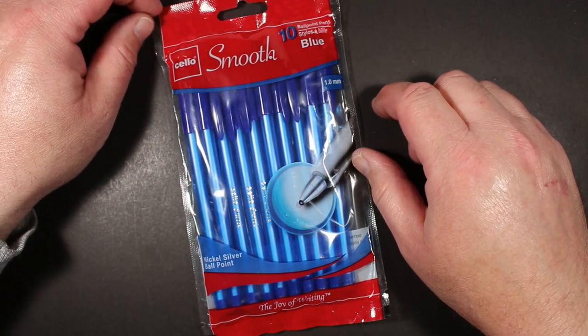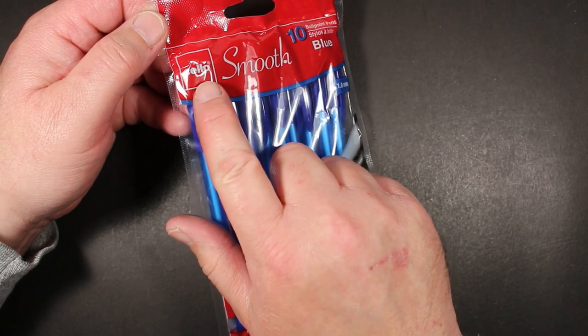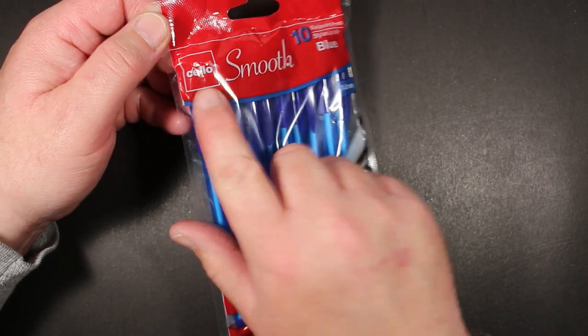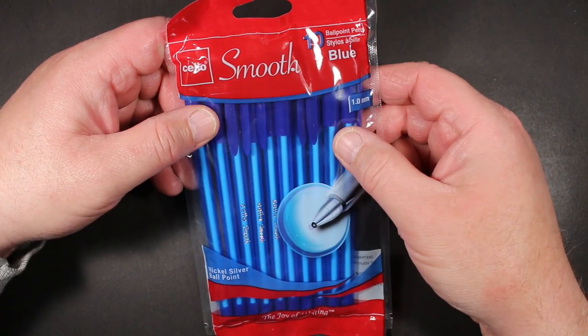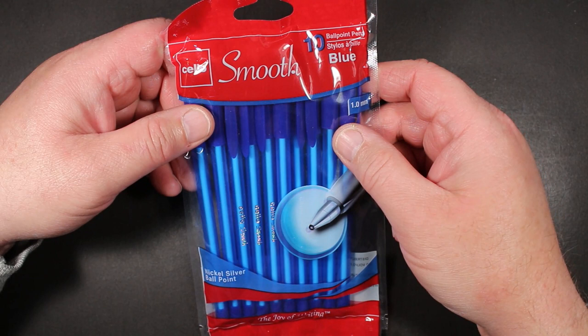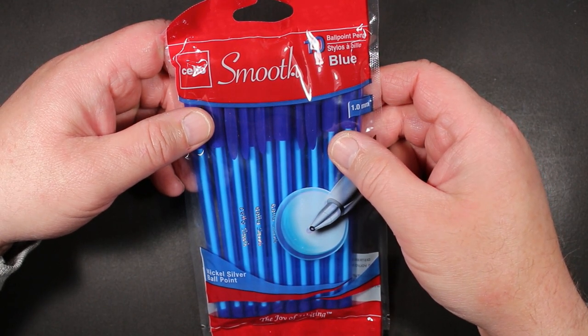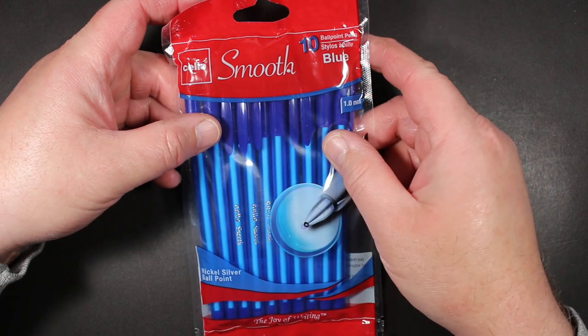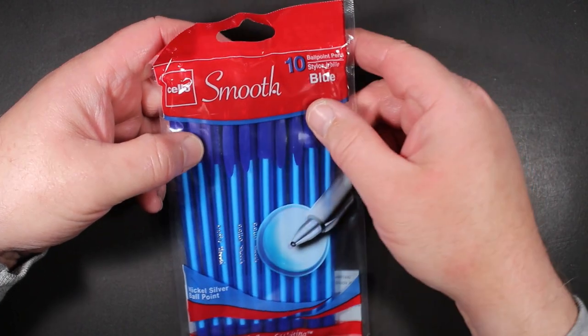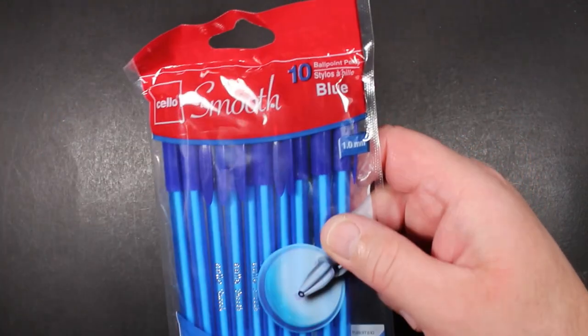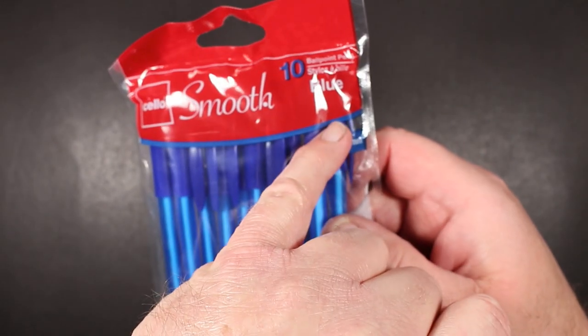I have looked at the Cello, or Cello, not sure how we're saying it, brand pens in the past. These are often found here at dollar stores. This is the Smooth. You can see ten ballpoint pens in blue.